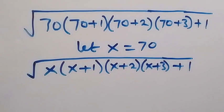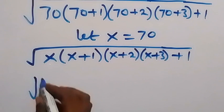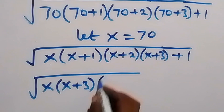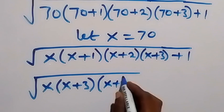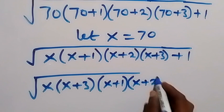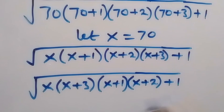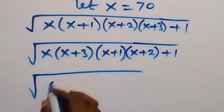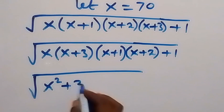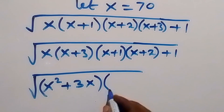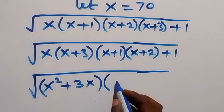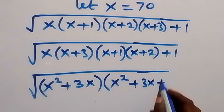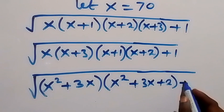Now let's bring x and (x plus 3) together. We have the square root of x(x plus 3) multiplied by (x plus 1)(x plus 2), then plus 1. When we expand, x(x plus 3) gives x squared plus 3x, and (x plus 1)(x plus 2) gives x squared plus 3x plus 2.